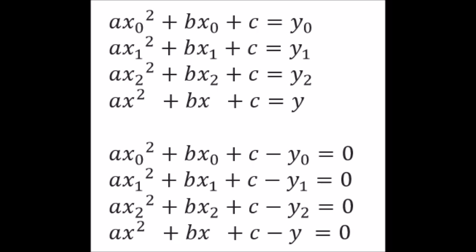Notice that coordinate pairs occur in the first three lines, x0, y0, x1, y1, and x2, y2, but the fourth line has a generic x and y.